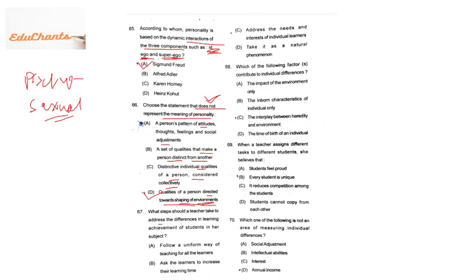Question 67: what should a teacher do to address differences in learning achievement? The answer is to address the needs and interests of individual learners — not follow a uniform approach, not ask students to increase study time, and not treat it as a natural phenomenon. Question 68: which factors contribute to individual differences? Again, both heredity and environment — their interplay — contribute to individual differences.